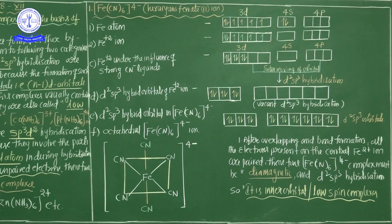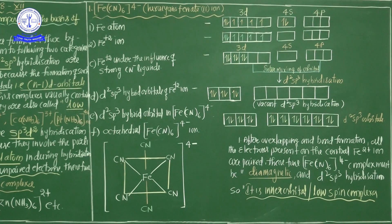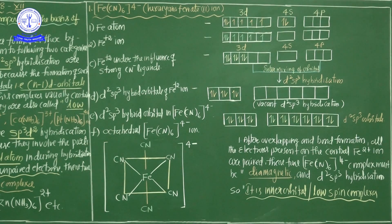Each CN⁻ group donates 2 electrons and 1 negative charge to the central Fe²⁺. Therefore the total number of electrons around the iron nucleus after complex formation: 26 − 2 + 12 = 36 electrons. This is calculated using the Effective Atomic Number (EAN). The total complex net charge is −4.